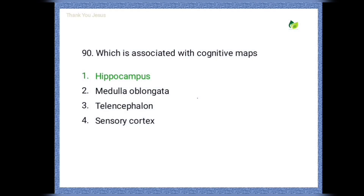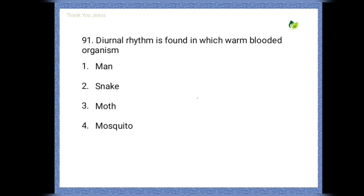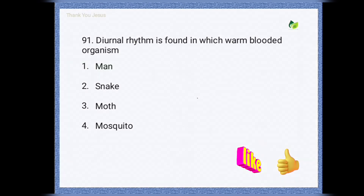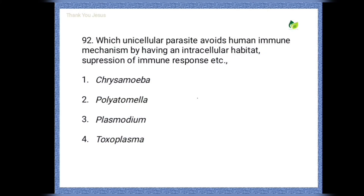Next question: diurnal rhythm is found in which warm-blooded organism? Options are: man, snake, moth, mosquito. The correct answer is man.